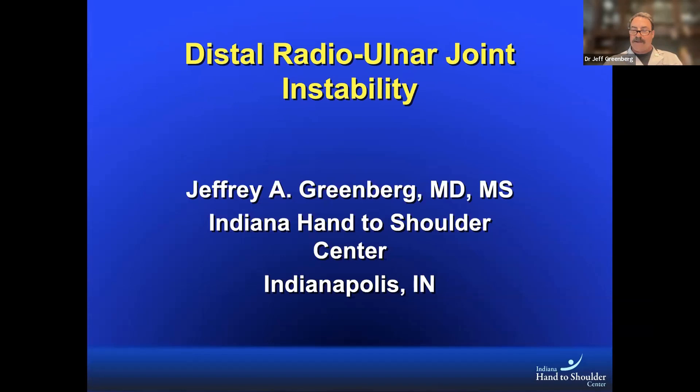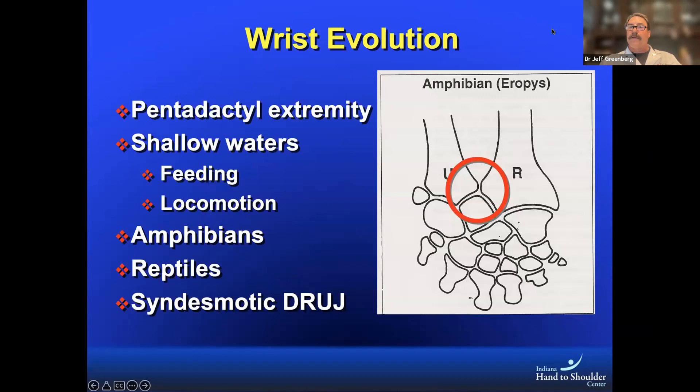Let me start by talking about evolution. Our wrist has really evolved from the pentadactyl extremities we see in the amphibian. The DRUJ at that point was really just a syndesmosis, which allowed amphibians to do the things they needed to do without much modification.